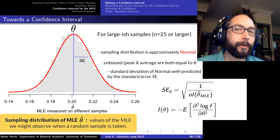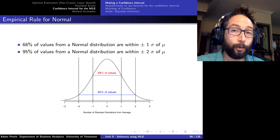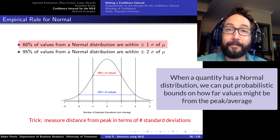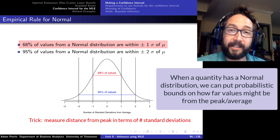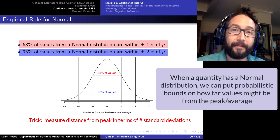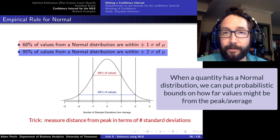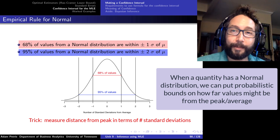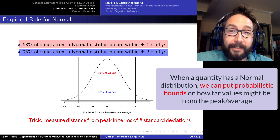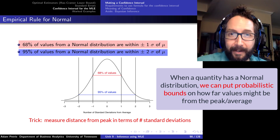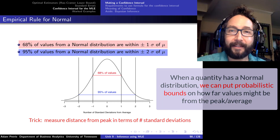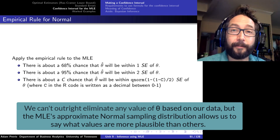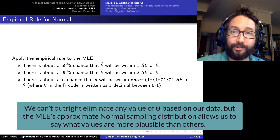To get this confidence interval, we're going to exploit what we know about the normal distribution. The empirical rule says that about 68% of values from a normal distribution are within one standard deviation of the peak, and about 95% of values are within two standard deviations. So if the sampling distribution of our MLE is approximately normal, we can put strong probabilistic bounds on how far off our theta hat is from the true value of theta, and use this to come up with a confidence interval.